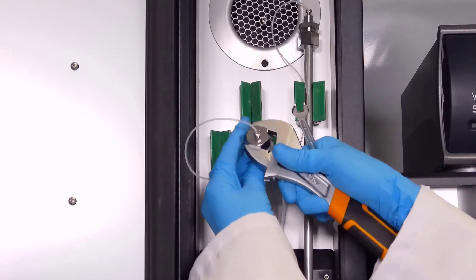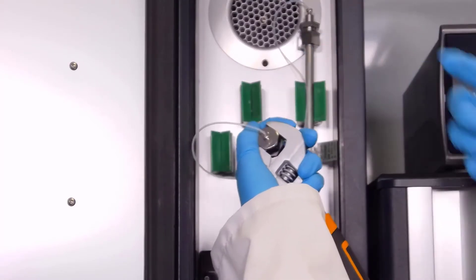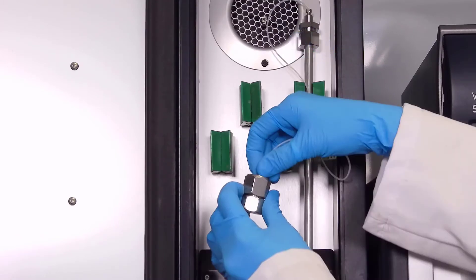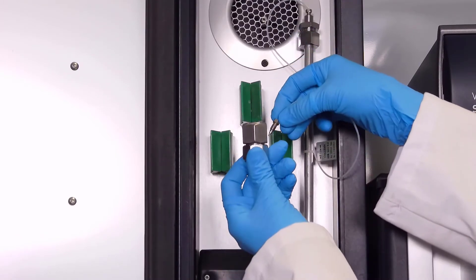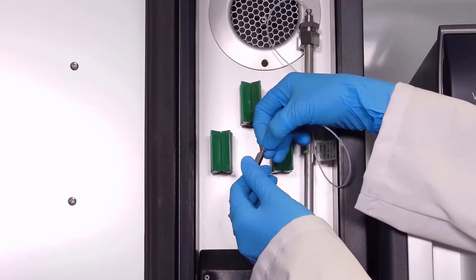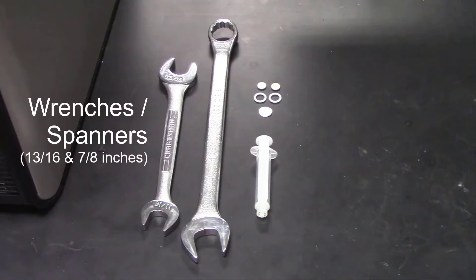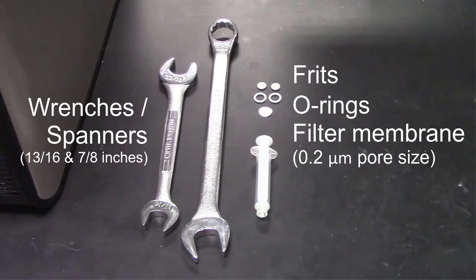Second, use appropriate wrenches to remove the post-column filter housing from the flow path. Use caps to seal the lines while the filter housing is removed. The tools you'll need to change the post-column filter include two wrenches, two new frits, two new Teflon o-rings, and a new filter membrane with 0.2 micron pores. A plastic syringe can also be helpful to remove the used components from the housing.